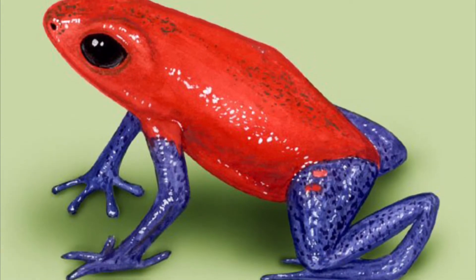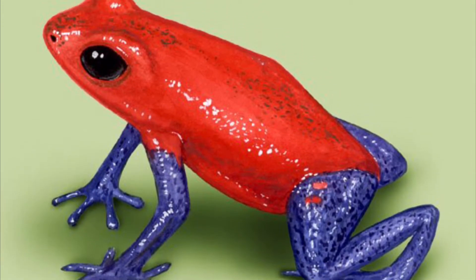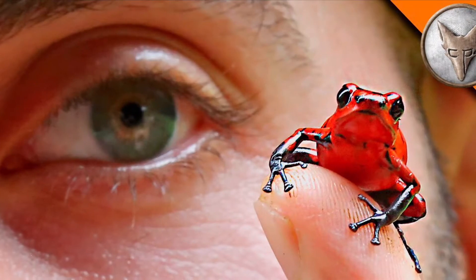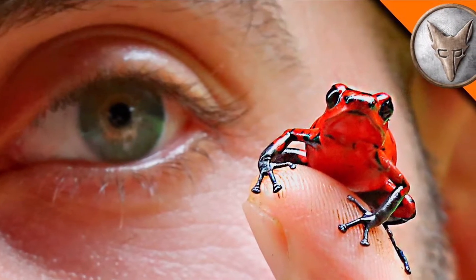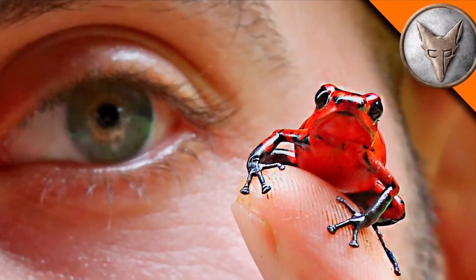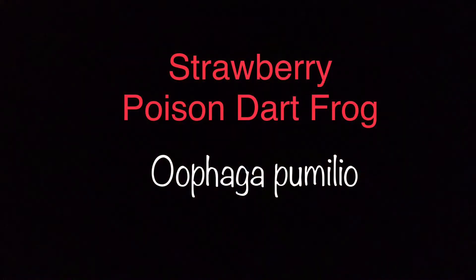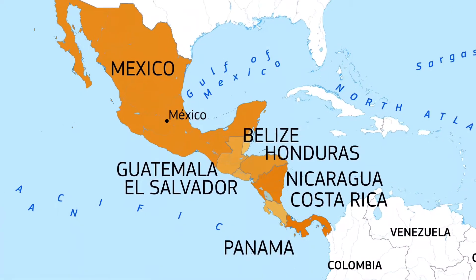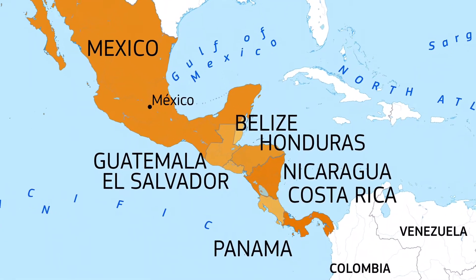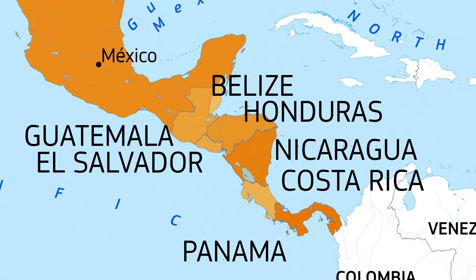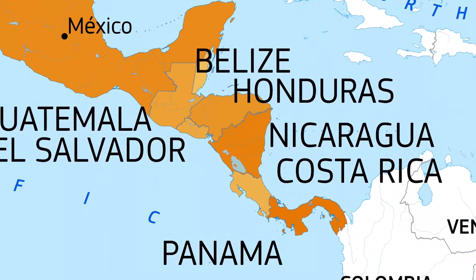The Strawberry Poison Dart Frog. This is a very small frog that gets its name from its red color and its poisonous skin. The Strawberry Poison Dart Frog has the scientific name Oophaga pumilio. This frog is found in the rainforests of Central America, mostly in the countries of Panama and Costa Rica.